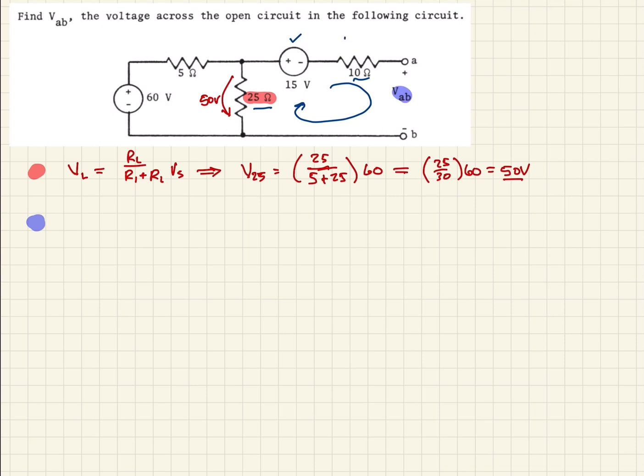which we said is 10 times 0 amps, is going to be 0 volts. So now we just sum up the voltages around this loop. So let's just start from this node and go this way. So we see we have 15 volts for the 15 volt source, plus 0 volts, which we said was the 10 ohm resistor. Then we have VAB,